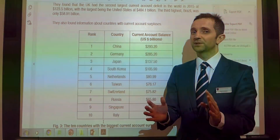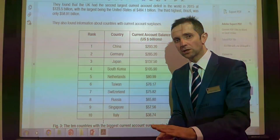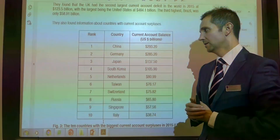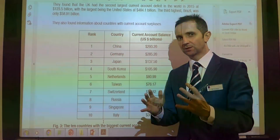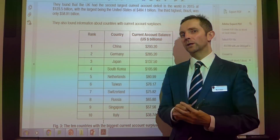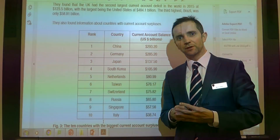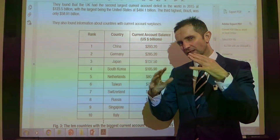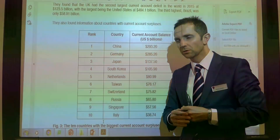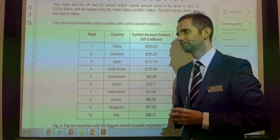The flip side of the same coin is that a very weak currency means imports are very expensive. As a consequence, ceteris paribus, the demand for imports will be low. Those two things combined - high exports and low imports - obviously give you the current account surplus. So that's one reason.